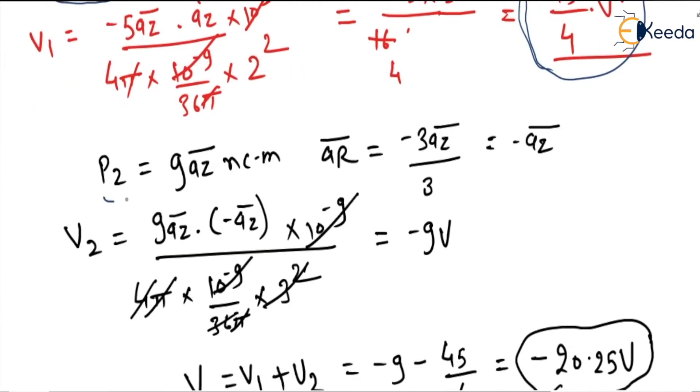Now p2 is given as 9az nanocoulomb-meter, and ar vector in the same way will come as -az. We put here V2 equals 9az dot -az